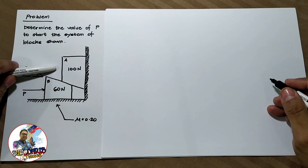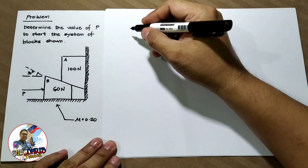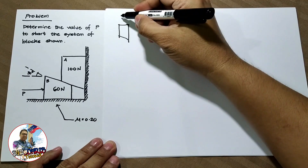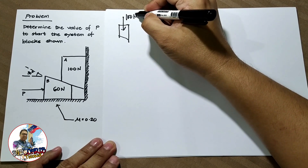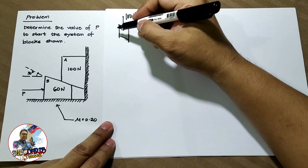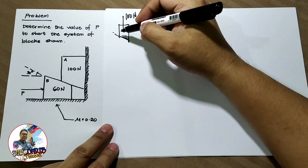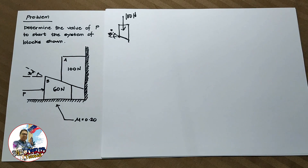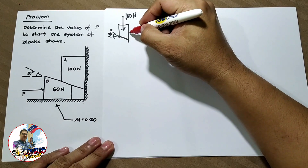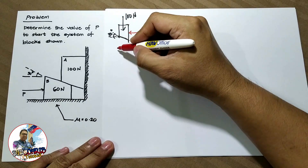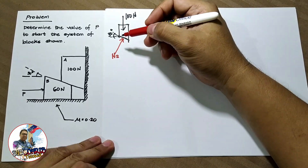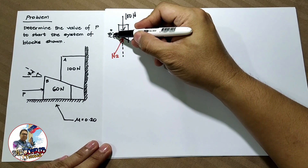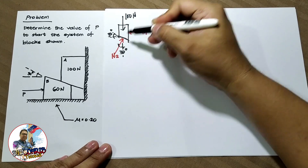Let us start by analyzing the free-body diagram of block A. Drawing the free-body diagram, for block A we have the weight of block A, 100 N. Then we draw the angle of block A with respect to horizontal, which is 30 degrees. We also draw other forces like the normal force here — let's call this N1, and let's call this N2. The angle of N2 with the vertical is also 30 degrees.